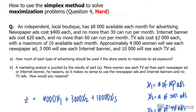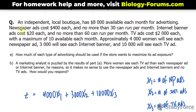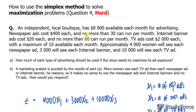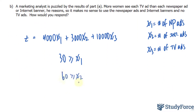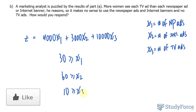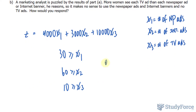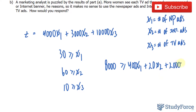We also need to write down the constraints. The newspaper ads cost $400 each and no more than 30 can run per month, so 30 is the maximum number of newspaper ads. No more than 60 internet ads can run per month, and for TV ads, 10 is the maximum. The last constraint is the $8,000 budget — you can't surpass that. Newspaper ads cost $400 each, internet ads cost $20 each, and TV ads cost $2,000 each.